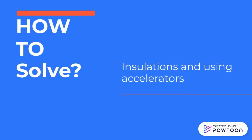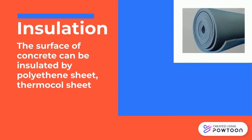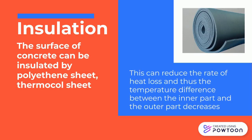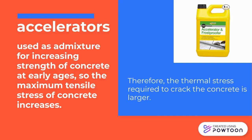How to solve this? Insulation or accelerators are needed. There are several precautions regarding thermal cracking. Firstly, the surface of concrete can be insulated by polyethylene sheet and thermal coal sheet. This can reduce the rate of heat loss, and thus the temperature difference between the inner part and outer part can be decreased. On the other hand, accelerators can be used as a mixture for increasing the strength of concrete at early ages. So the maximum tensile stress of concrete increases, and therefore the thermal stress required to crack the concrete is larger.